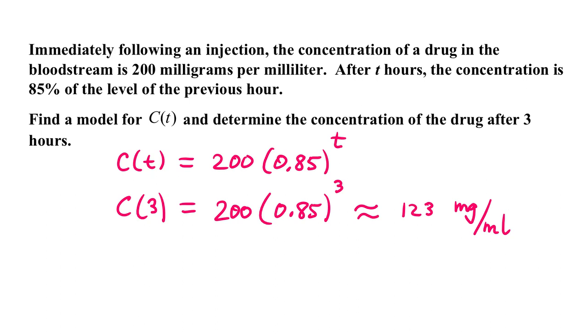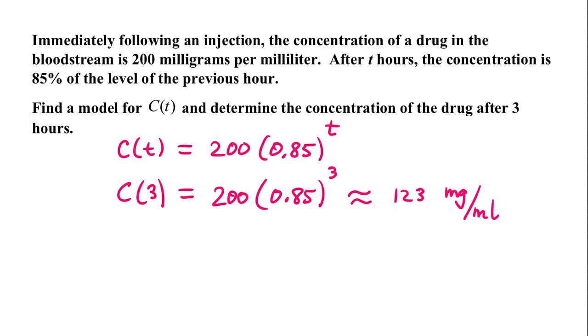In the next example, we have decay. Sometimes you'll see this in radioactive substances, where the substance decays over time. In this case, we're going to look at a particular medicine and the way the body filters it out. The amount of medicine in the bloodstream decays over time. Immediately following an injection, the concentration of a drug in the bloodstream is 200 milligrams per milliliter. After T hours, the concentration is 85% of the level of the previous hour.